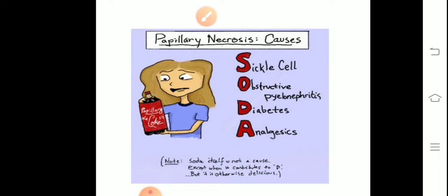First, the causes of papillary necrosis. To make this easy we have the mnemonic SODA. Papillary necrosis - that is the necrosis of renal papilla as the name suggests. So what are the causes of renal papilla? You can remember this by mnemonic SODA: S stands for sickle cell, O stands for obstructive pyelonephritis that is obstructive renal inflammation, D that is diabetes, and A that is analgesics. SODA itself is not a cause, but otherwise it is delicious we all know.